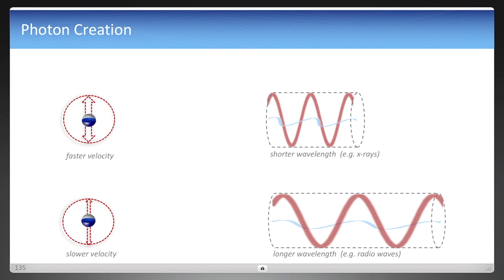The speed of that vibration results in different wavelengths. A faster velocity is going to be a shorter wavelength, such as x-rays, or a slower velocity is going to be a longer wavelength, such as radio waves.